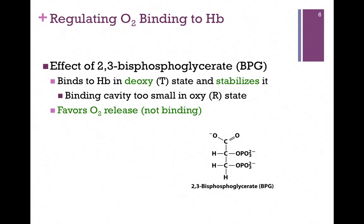In the R state of hemoglobin, the molecule is more compact, and so the binding cavity is too small. In other words, hemoglobin in the R state will not bind bisphosphoglycerate. So in the presence of bisphosphoglycerate, hemoglobin is favored toward oxygen release, not binding oxygen, but releasing it.